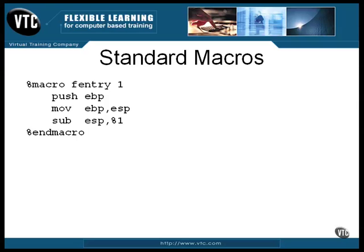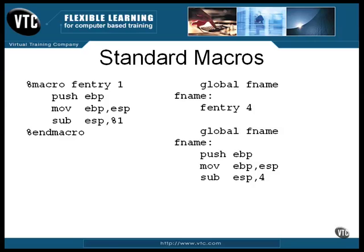For example, say you want to write a function that will use four bytes. You write the code like this. The number specifies that four bytes of workspace is to be set aside for local storage inside the function. The code it generates looks like this.